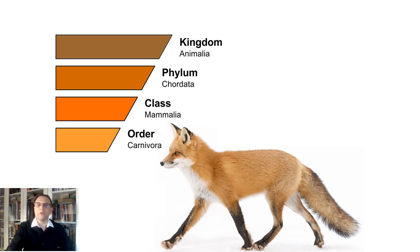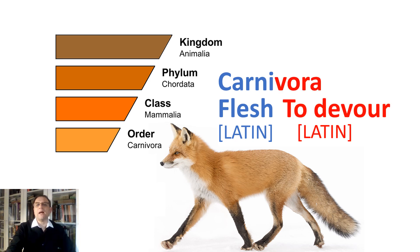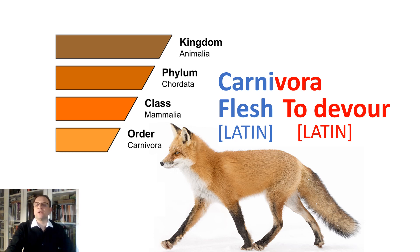The next taxon is order. Foxes belong to order Carnivora. Carni in Latin means flesh, and vora in Latin means to devour. So foxes belong among the meat-eating organisms such as wolves, dogs, cats, raccoons, bears, hyenas, and seals, to name just a few.